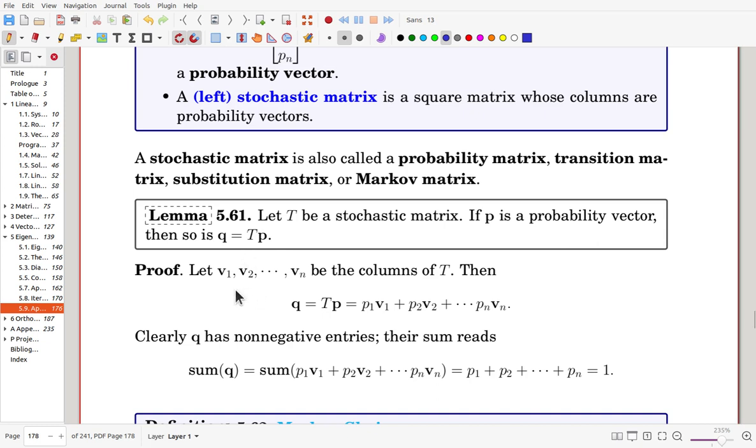Proof. Let v1, v2, ..., vn be the columns of T. Then q = Tp = p1v1 + p2v2 + ... + pnvn. Clearly q has nonnegative entries; their sum reads. The reason is that originally, P has only non-negative entries, and also T has non-negative entries. Their product must be non-negative.